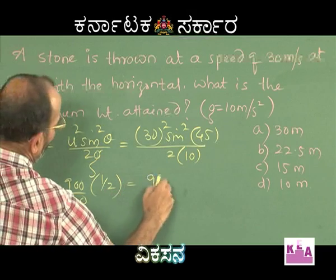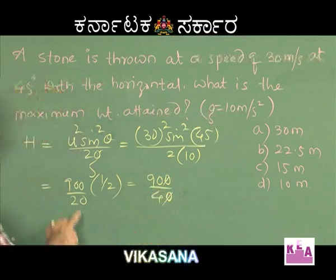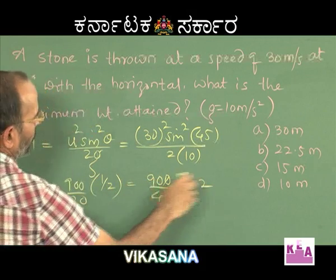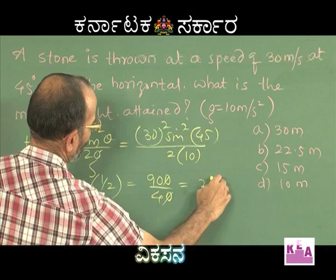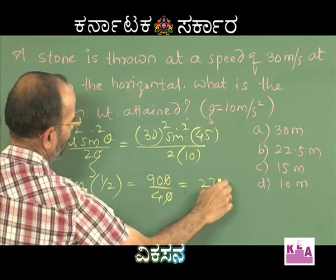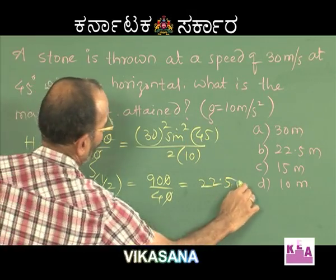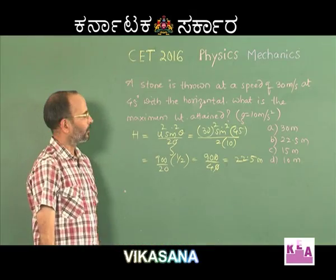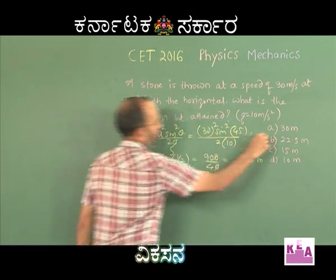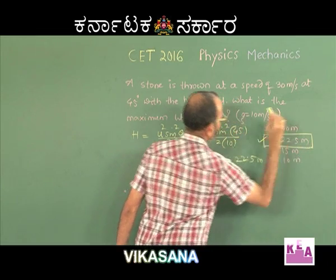That gives 900 times one-half — since sin 45 is 1 over root 2, its square is 1/2 — divided by 20, which equals 900 divided by 40, giving 22.5 meters. Option B is perfectly correct.